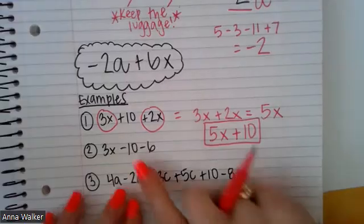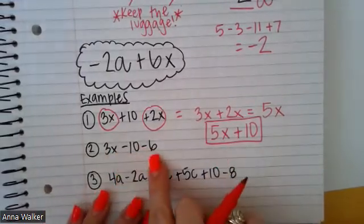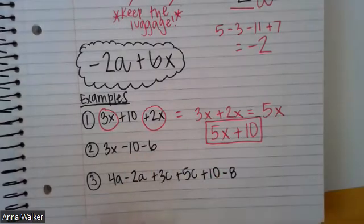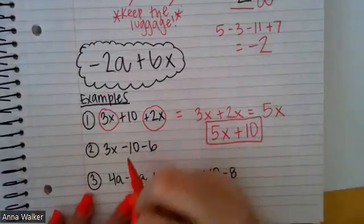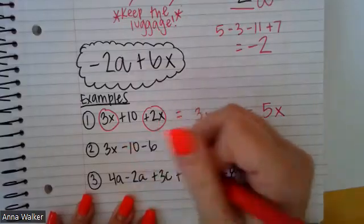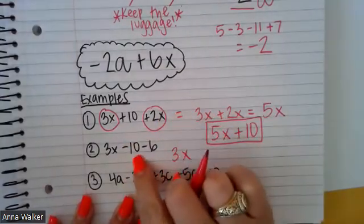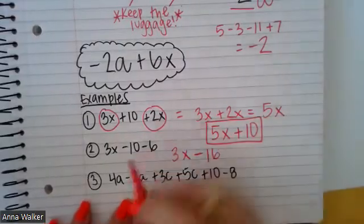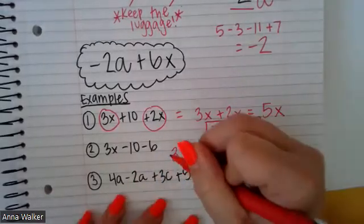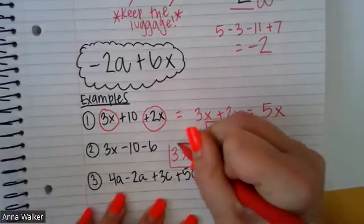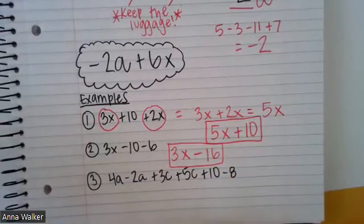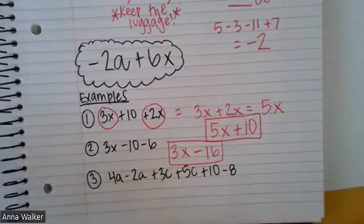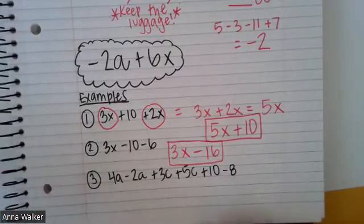If I look at the second problem, my like terms, well I don't have any other terms that have the same variable, but I do have two constants. I know from my integer rules I can combine numbers. I can combine minus 10 and minus 6. If I combine that, that's going to be 3X and then minus 10 minus 6 is going to be negative 16. This one can combine to 3X minus 16. Sometimes it's not just the coefficients in terms that have variables, sometimes it's the constants that can be combined as well.